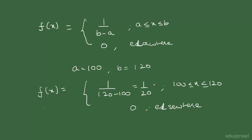So you can use this formula if you are working with a random variable that is uniformly distributed, and using this formula you can find the uniform probability density function.